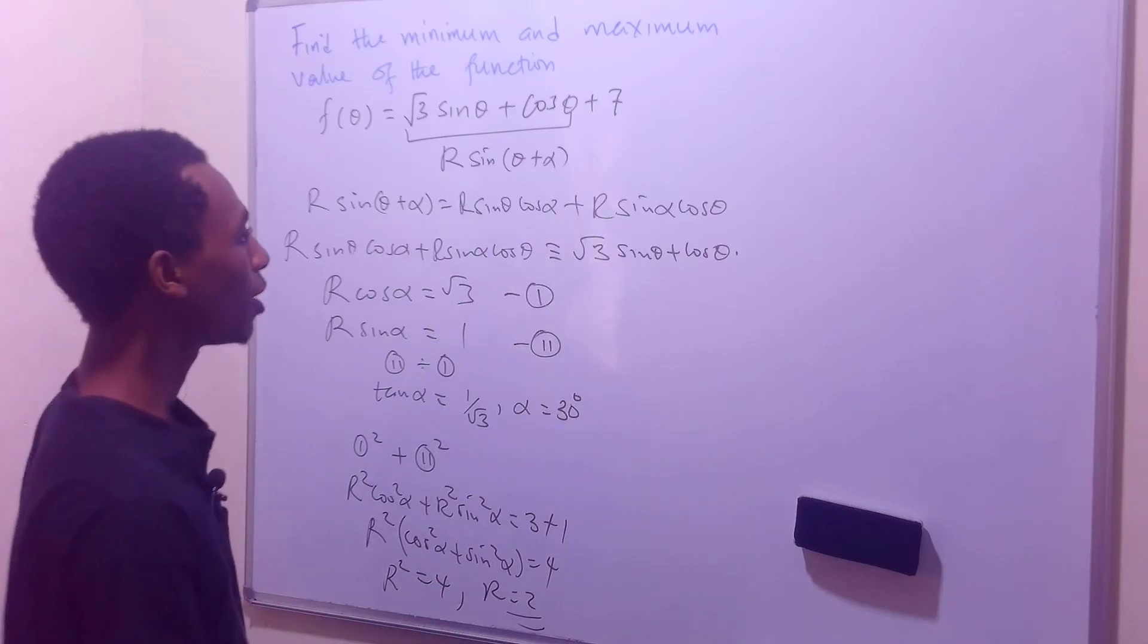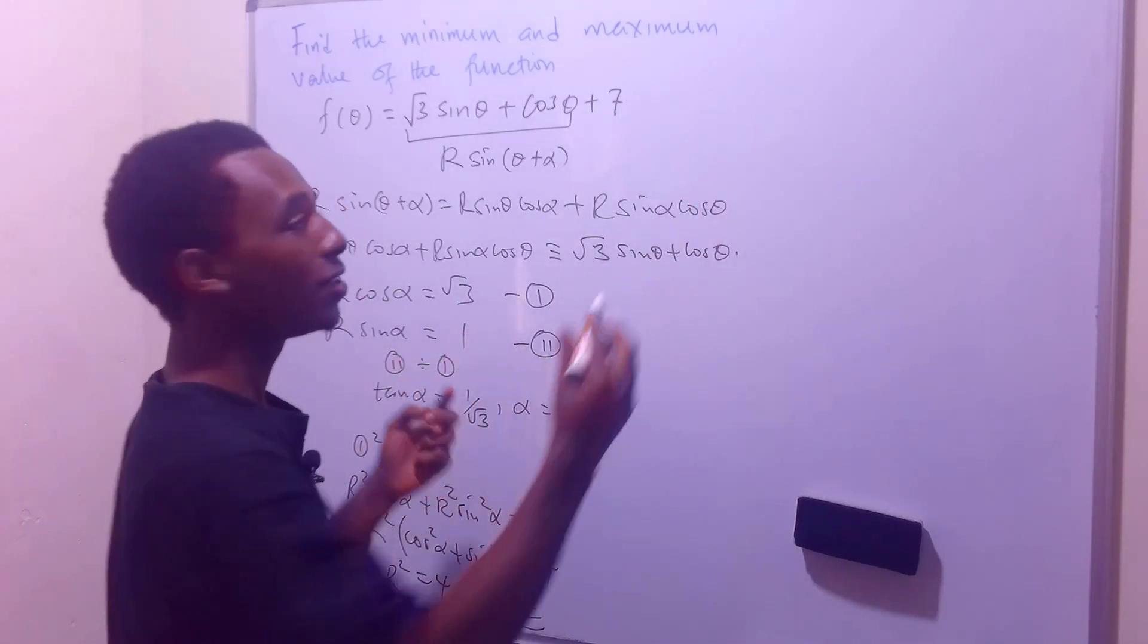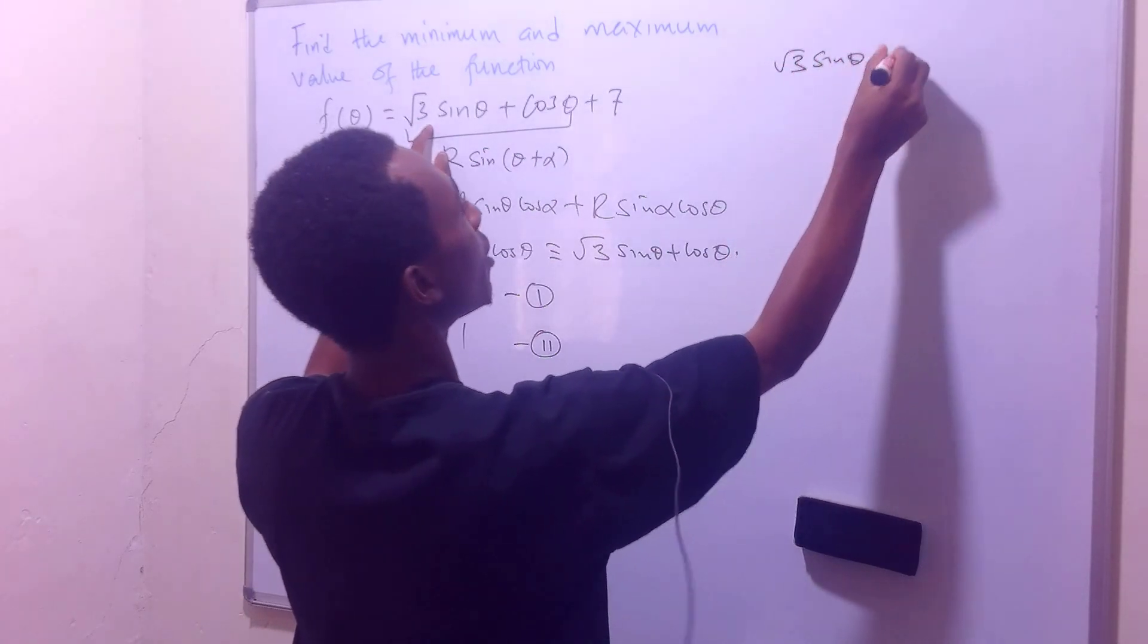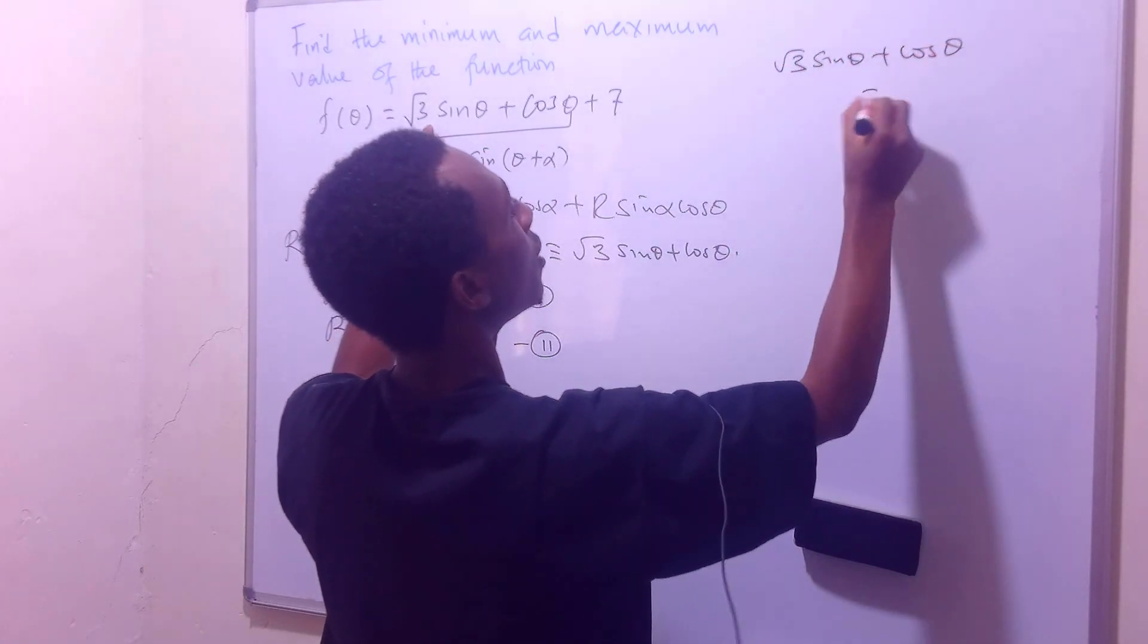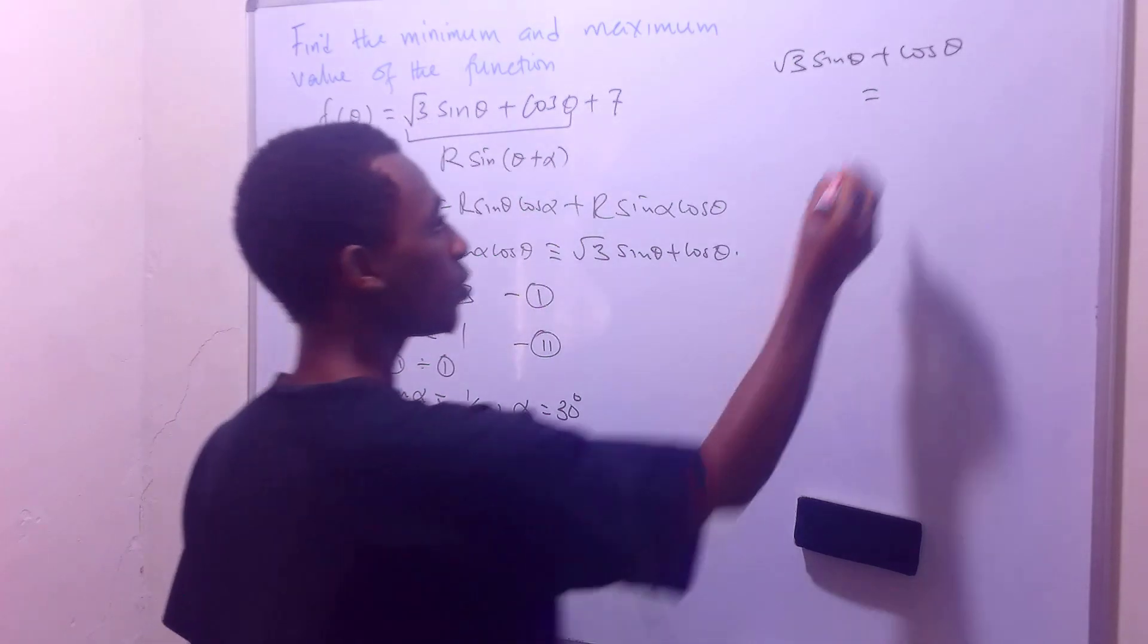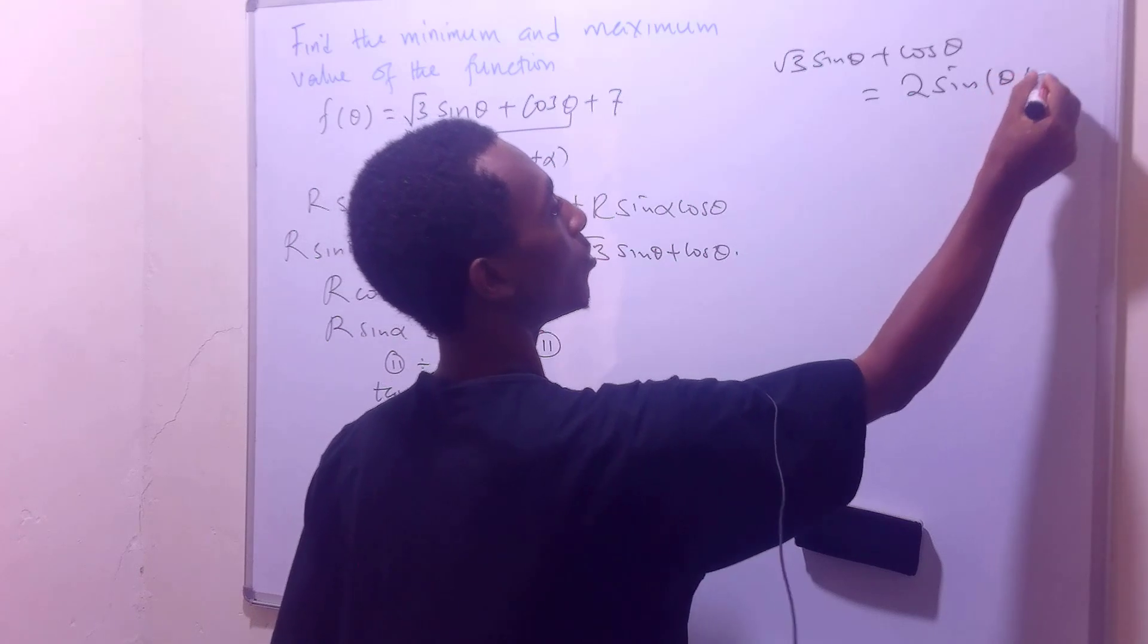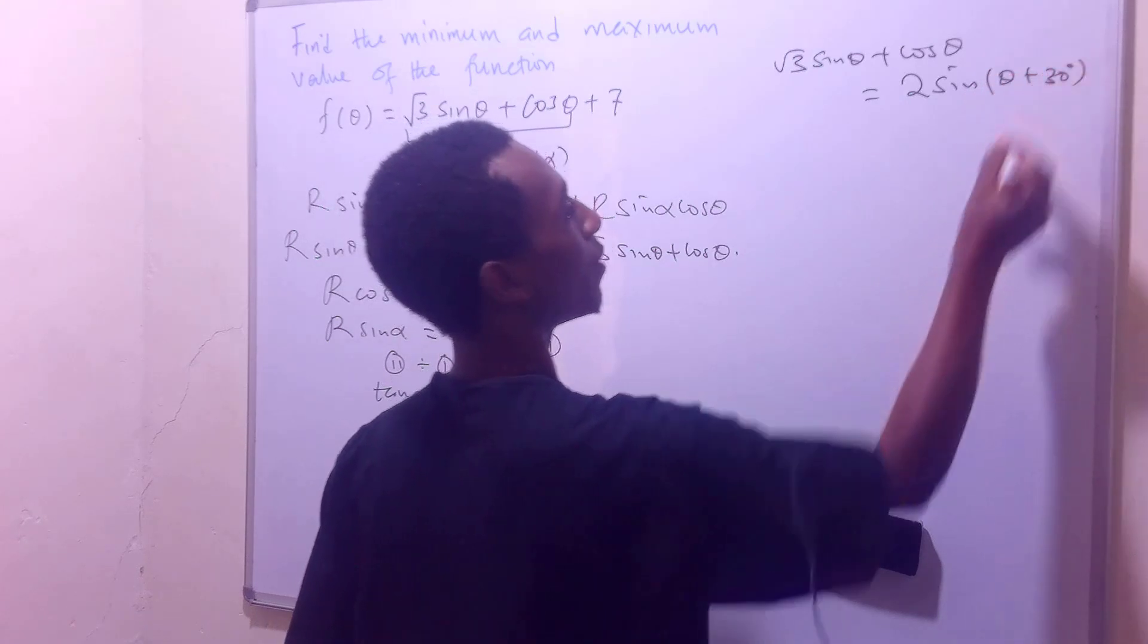We'll take the positive square root. So it means that √3 sin(θ) + cos(θ) is the same as 2 sin(θ + 30°).